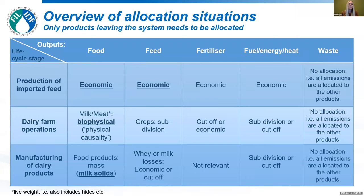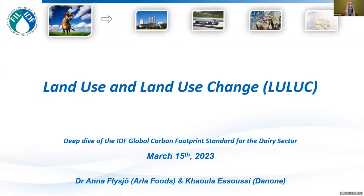To finalize with a summary: the most important allocation situations are — for imported feed production, economic allocation is used; for the dairy farm operation allocating between milk and meat, biophysical allocation is used; and at the dairy manufacturing site for dairy products, the allocation key is based on milk solids. That concludes the manufacturing allocation section.